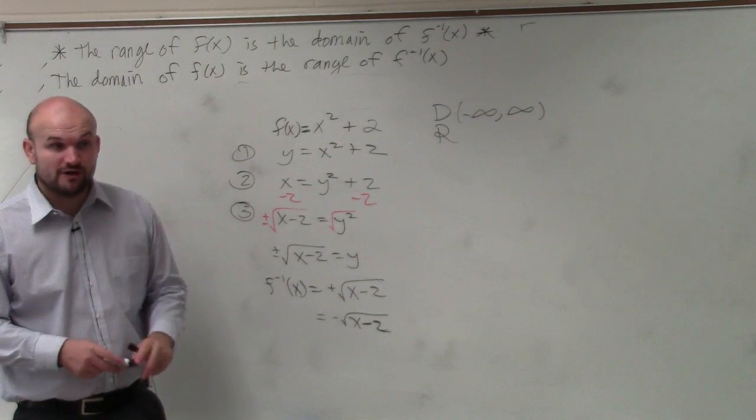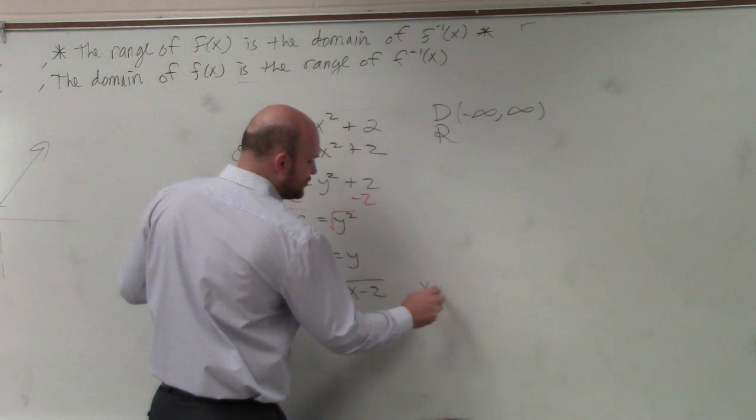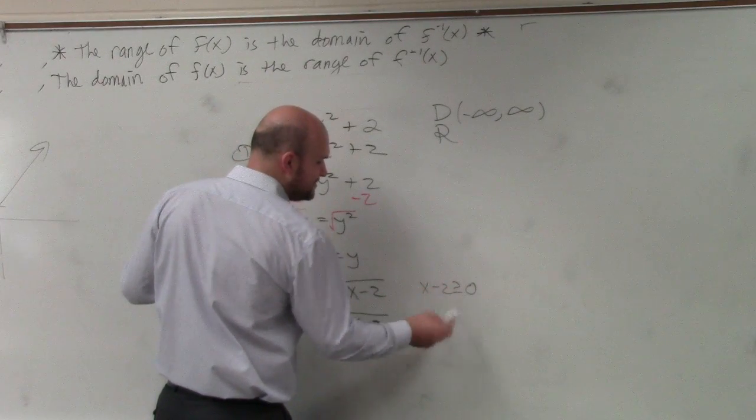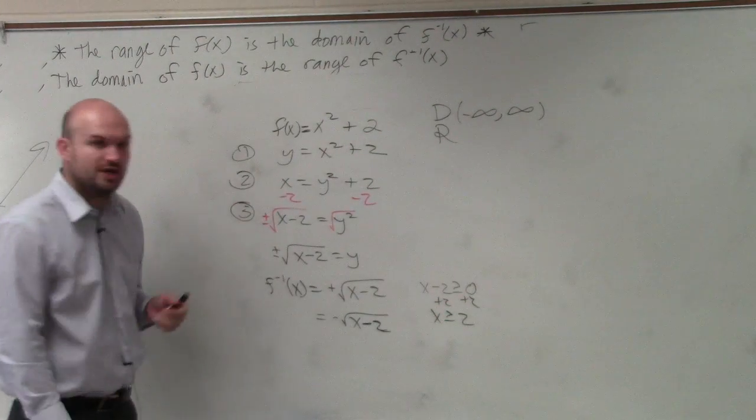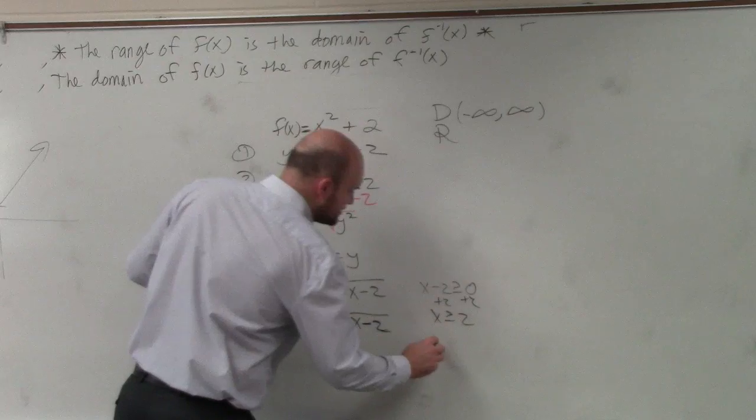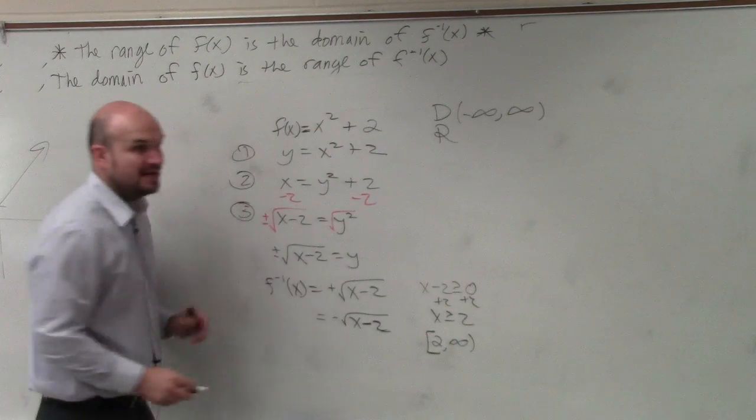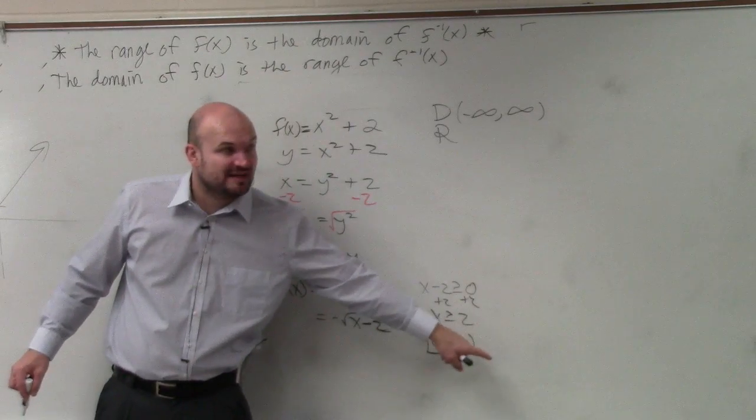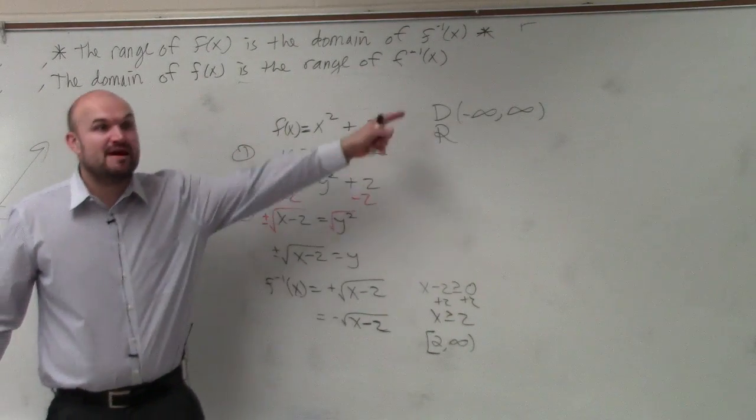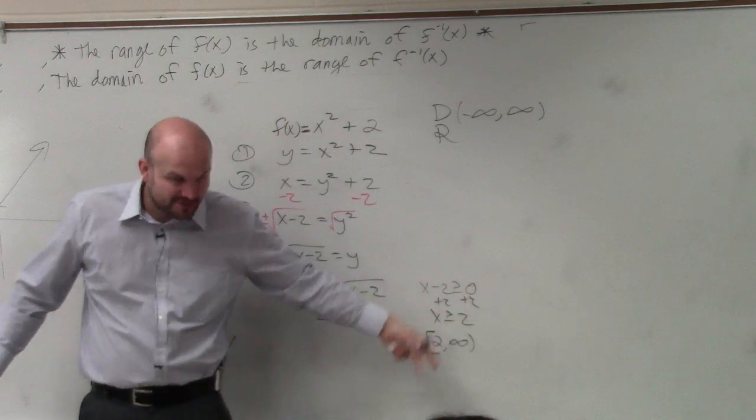What we've been doing over and over, whenever you have numbers under a radical, you set them greater than or equal to zero, and you solve. X has to be greater than or equal to 2. How do you write that in domain notation? 2 to infinity. Right? So the domain of my inverse function is 2 to infinity. That tells me that my range of my original function has to be 2 to infinity.